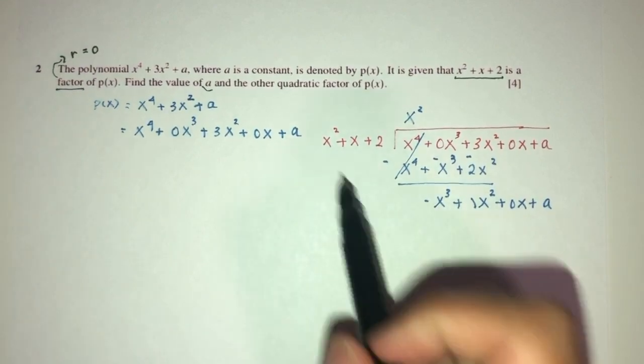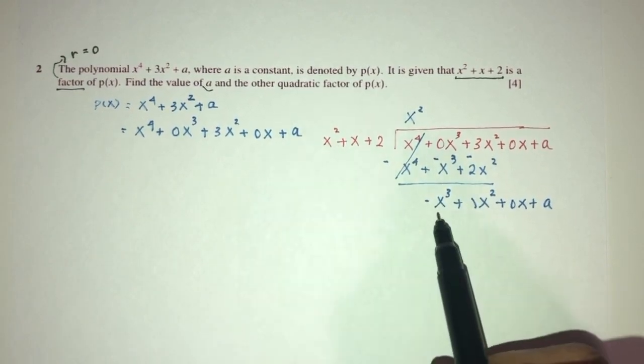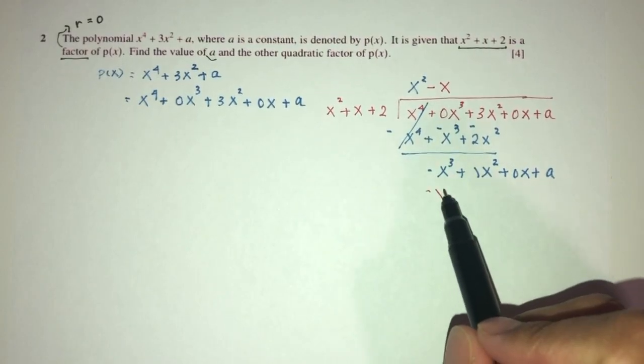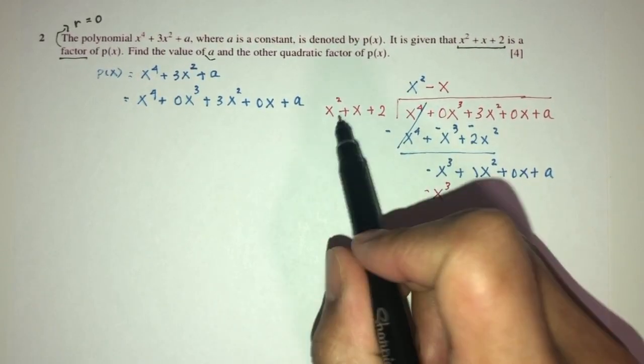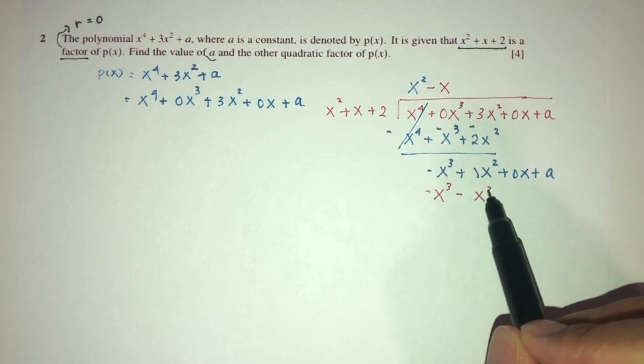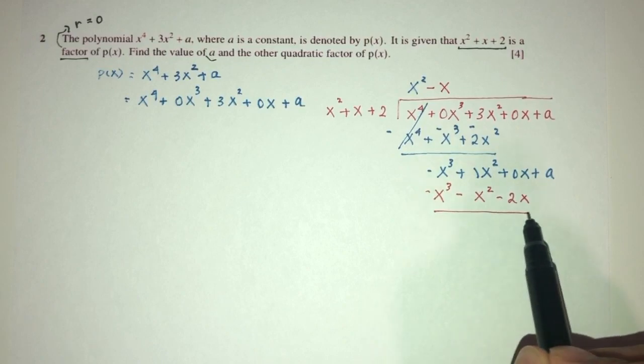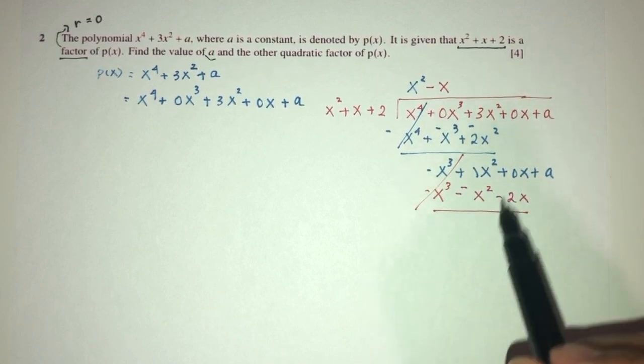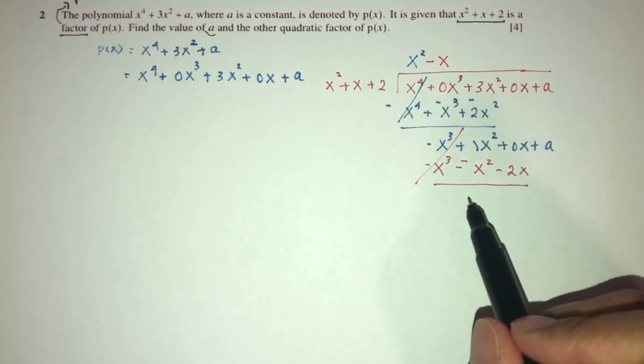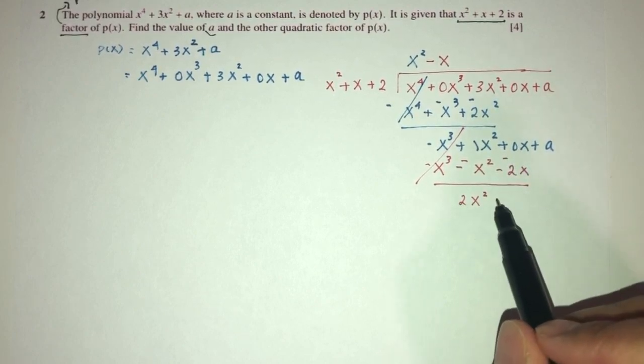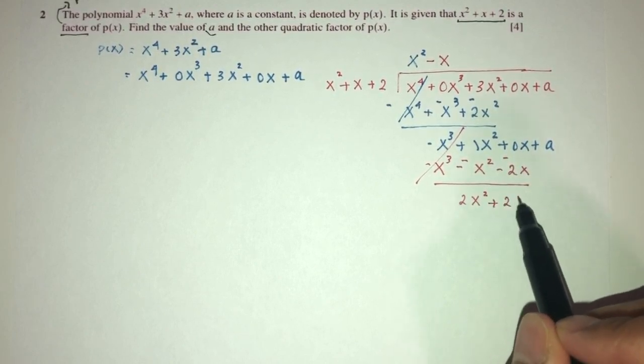Next one. How can you make x square become minus x cube? You have to have minus x. You have minus x cube and then here we have minus x square and then here we have minus 2x. This will go away. 1 minus minus 1, that will be 2x square. 0 minus minus 2 will be plus 2x and plus a.